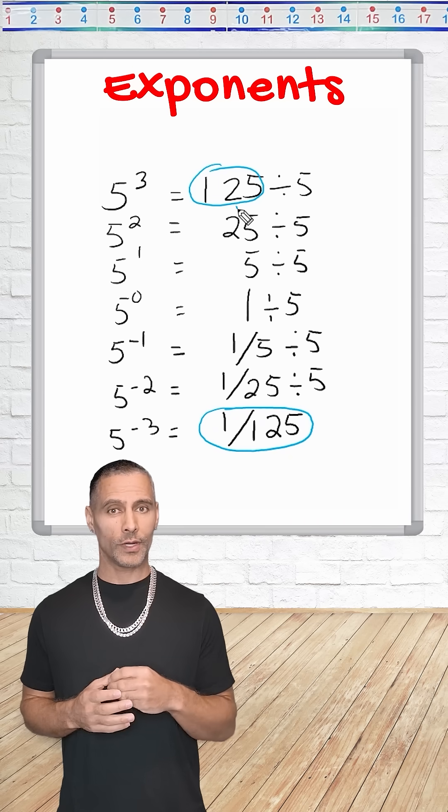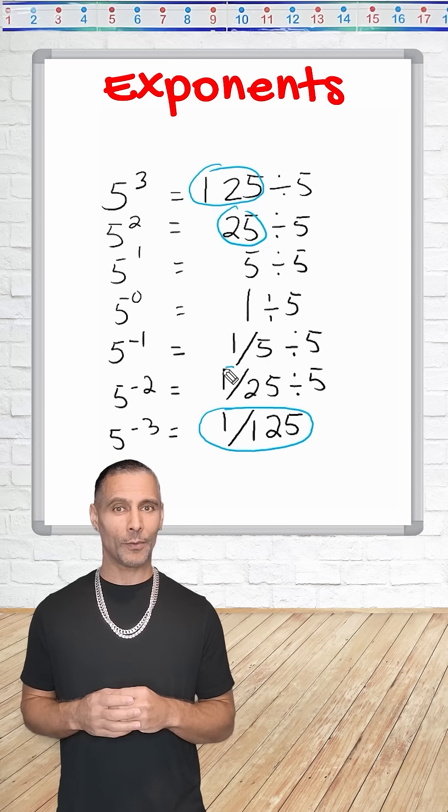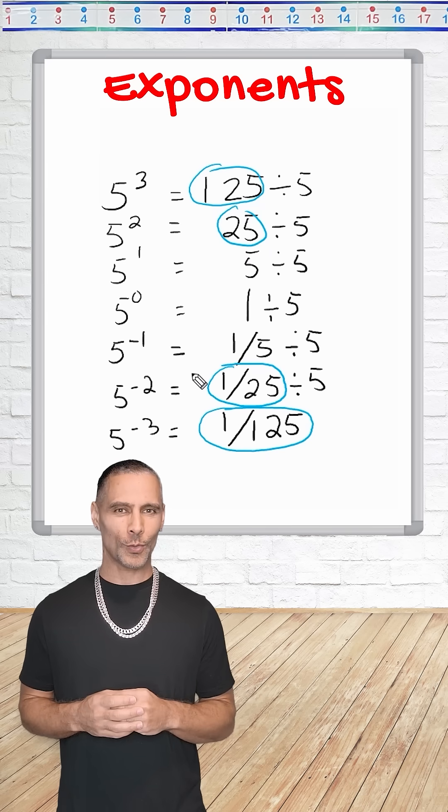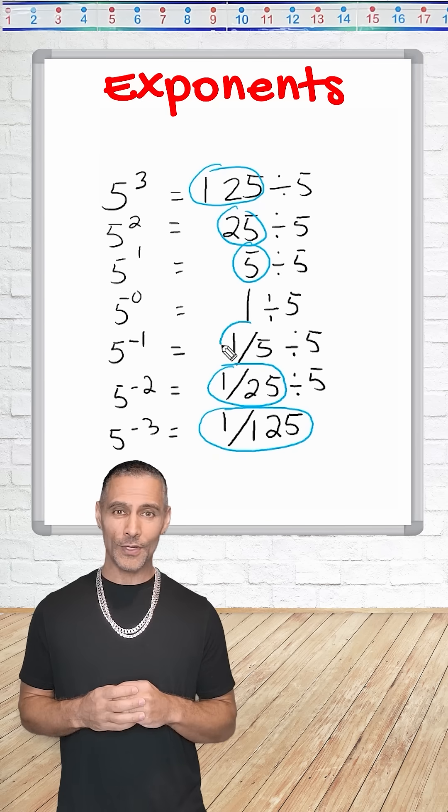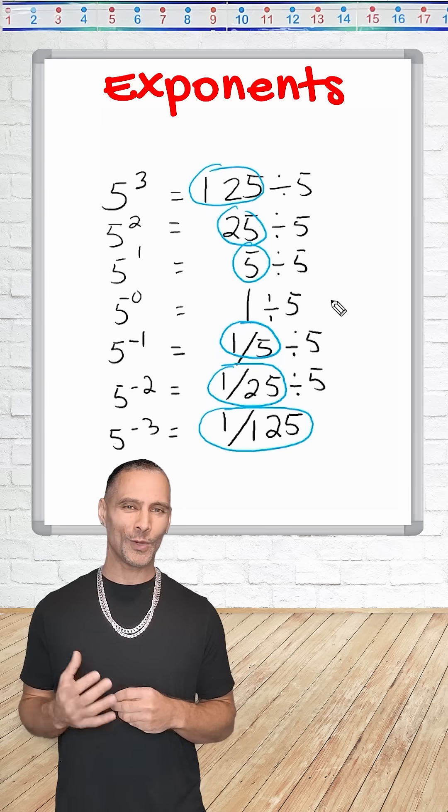5 to the second power is 25, so 5 to the negative second power is the reciprocal of 25, which is 1 over 25. And 5 to the first power is 5, so 5 to the negative first power is the reciprocal of 5, which is 1 fifth.